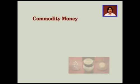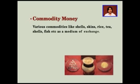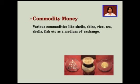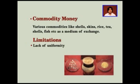Because of all these deficiencies, the commodity money was introduced. Various commodities like shells, skin, rice, tea, etc. took the form of money. The people who were living near the seashores used shell, fish, etc. as the medium of exchange. But again, there were certain limitations like lack of uniformity, portability, and indivisibility.